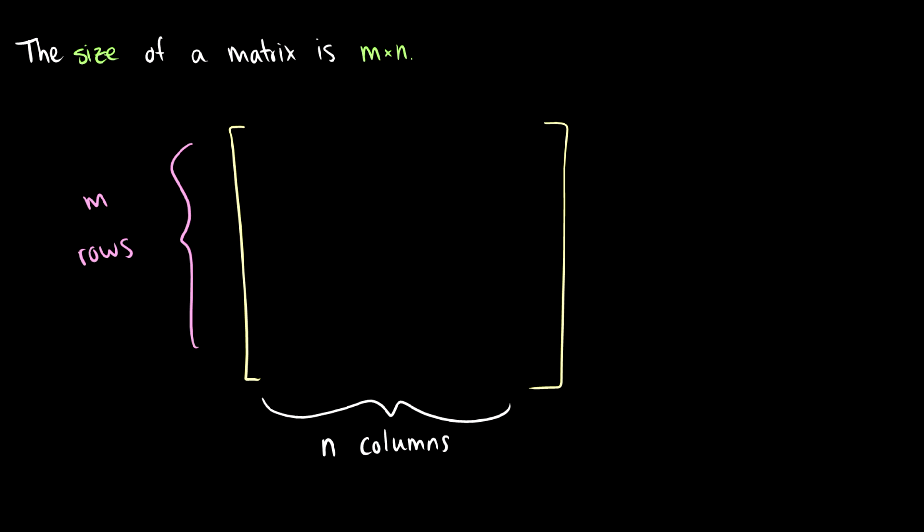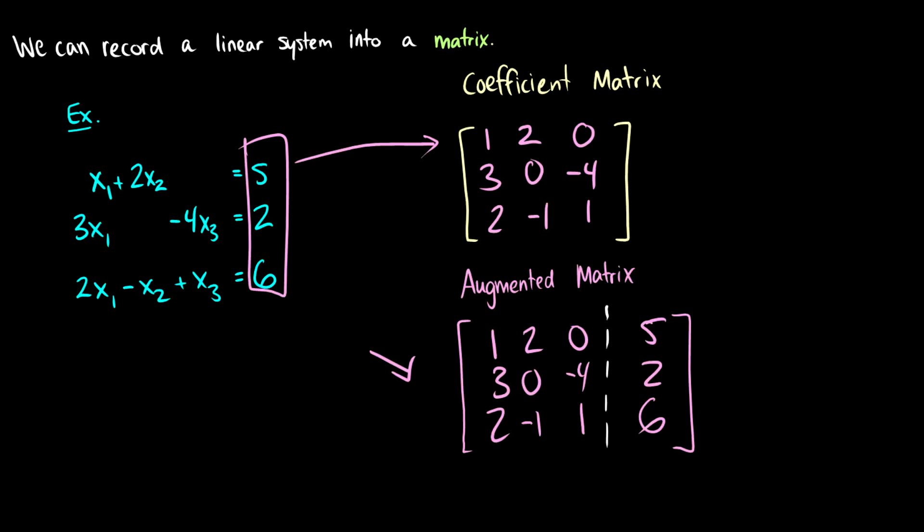So when we have a matrix, we have to give it a size, and we have to be consistent with our naming so we know what we're talking about here. So when I say this matrix above, this augmented matrix is a 3x4 matrix, you need to be able to think in your head 3x4 and come up with the size and the shape of it immediately.